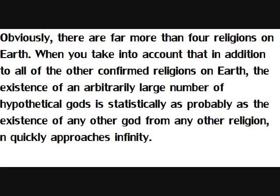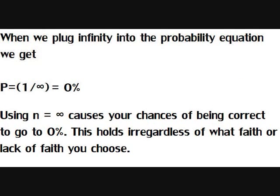Obviously, there are far more than four religions on Earth. When you take into account that in addition to all of the other confirmed religions on Earth, the existence of an arbitrarily large number of hypothetical gods is statistically as probable as the existence of any other god from any other religion, n quickly approaches infinity. When we plug infinity into the probability equation, we get p equals 1 over infinity, or 0%. You split any number an infinite number of times, you're getting 0. Using n equals infinity causes your chances of being correct to go to 0%, and this holds regardless of what faith or lack of faith you choose.